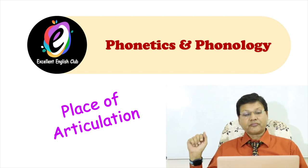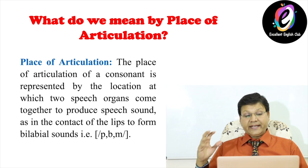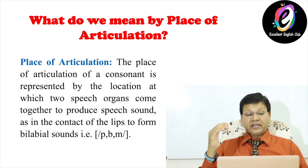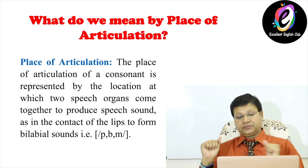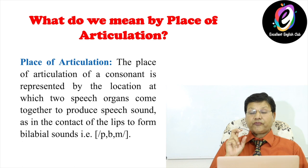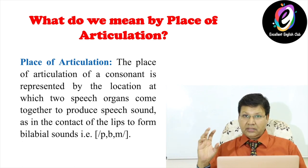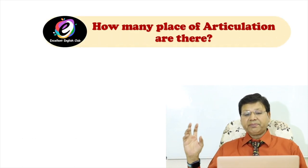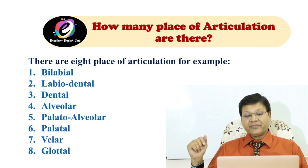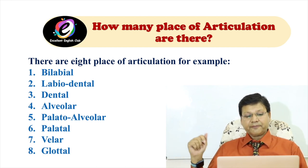What do we mean by place of articulation? The place of articulation of a consonant is represented by the location at which two speech organs come together to produce a speech sound — as in the contact of the two lips to form a bilabial sound like /p/, /b/, /m/. There are eight places of articulation: bilabial, labiodental, dental, alveolar, palatal, post-alveolar, velar, and glottal.